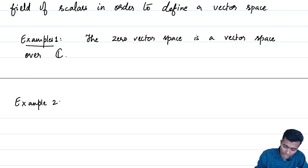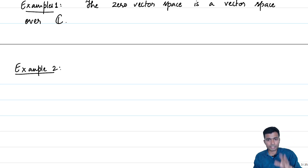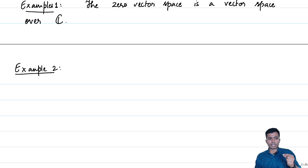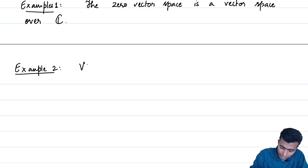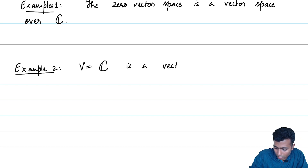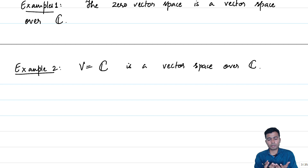The second example: C itself is a vector space over C. Vector addition is the usual addition of complex numbers, and scalar multiplication — taking a complex scalar and a vector (both complex numbers) — is just the normal multiplication of complex numbers. This becomes a vector space over C.